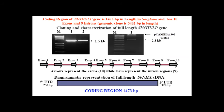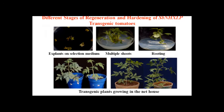To identify the functional role of these transporters, we isolated a gene named SbNHXLP — Sorghum bicolor sodium-proton antiporter-like protein — which is 1,473 base pairs in length with 10 exons and 9 introns. We developed an expression cassette using the pCAMBIA 1302 vector, which contains GFP. The isolation of the gene at approximately 1.5 kb is shown, along with a pictorial representation of gene structure showing the exon-intron organization and the full-length cDNA.